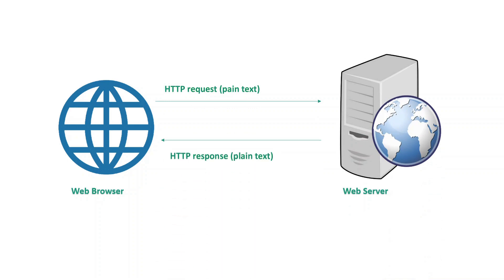Whenever you are initiating a request from a web browser it will be HTTP. HTTP means Hypertext Transfer Protocol — it is always plain text. When the browser initiates a request it will be a plain request to the server and the server also responds back in plain text. The problem with HTTP protocol is that whenever communication is happening between the web browser and web server, someone in between can try to hack your request and get your data. That's the problem with HTTP because it's plain text.